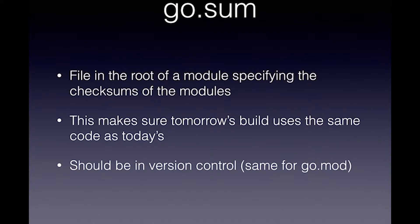Additionally, there's a go.sum file which basically specifies the checksum of all the modules. That's so you can be sure that your modules haven't changed in between — that somebody hasn't added a new version and tried to sneak something in. This should also be in version control. In the new 1.13 there are some changes there — at the moment this will only check what you have currently compared to what is on the internet, it will not vouch for the first time you downloaded it. They've added something to do that.